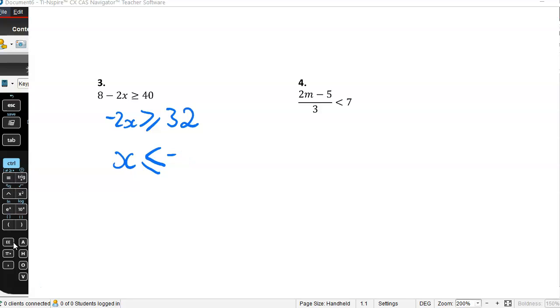you change the direction of the sign. So I started with negative 2x is greater than or equal to 32. So x must be less than or equal to negative 16.